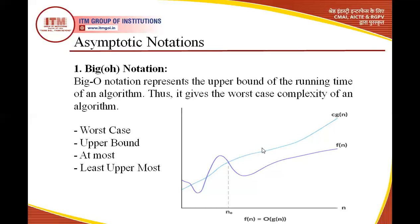Big O finds the least upper bound — 'at most' means the top value. There are many upper bounds, but we find the least uppermost value, which is c·g(n). The function f(n) is not greater than this value. We are looking for the least upper bound, not just any upper bound. Since we are finding the maximum time, this is called the worst case.